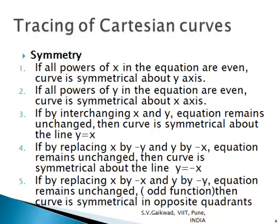For symmetry of Cartesian curves: if all powers of x in the equation are even, the curve is symmetrical about the y-axis — the word 'all' is important; if even a single power is odd, symmetry will not hold. Similarly, if all powers of y are even, the curve is symmetrical about the x-axis. If interchanging x and y leaves the equation unchanged, the curve is symmetrical about y = x. If replacing x by −y and y by −x leaves it unchanged, symmetry is about y = −x. If replacing x by −x and y by −y leaves it unchanged, the curve is symmetrical in opposite quadrants.